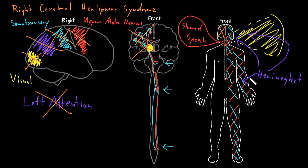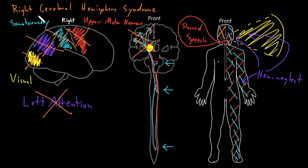For example, if you touch a person on the left side, they'll say they feel it. If you touch them on the right side, they'll say they feel it. But if you touch them on both sides at the same time, they'll say they only feel it on the right side — because they're just not paying as much attention to the left side. Those are some of the major abnormalities we see with dysfunction of the right cerebral hemisphere.